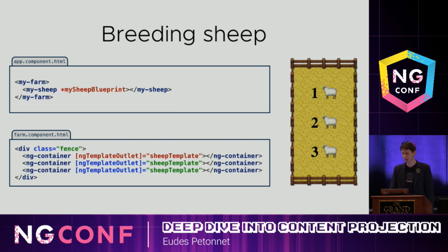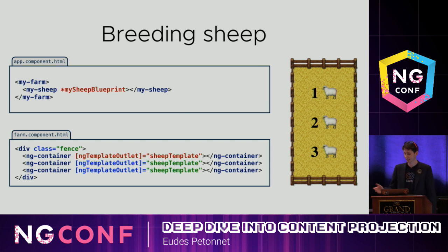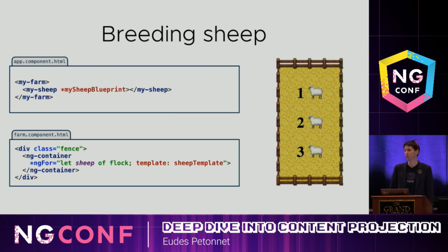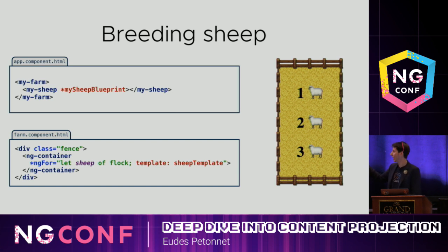Of course, copy-pasting template outlets everywhere isn't practical. You can use ViewContainerRef and other Angular services, but for the simpler case, ng-for offers a template option — you pass ng-for a template, and it uses that template instead of what's inside the ng-for. So I give my sheep template to ng-for and still get my sheep counting one, two, three the same way.